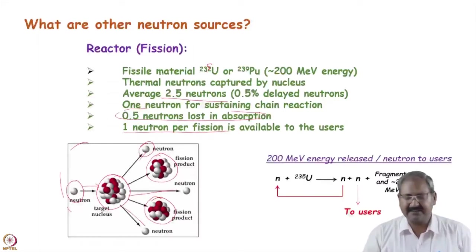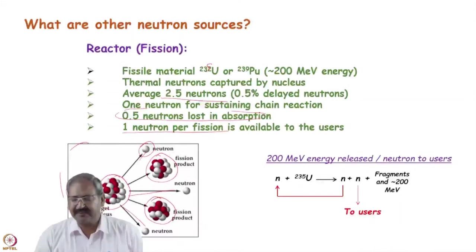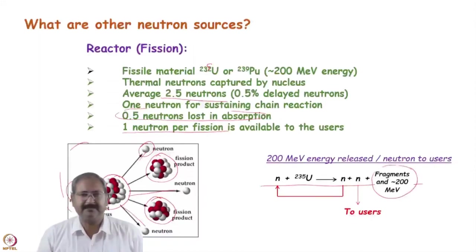The neutron flux which we get from these kinds of reactors is 10 to the 15 per second or so. This is the nuclear reaction shown here, and on each nuclear fission we get roughly 200 MeV of thermal energy.